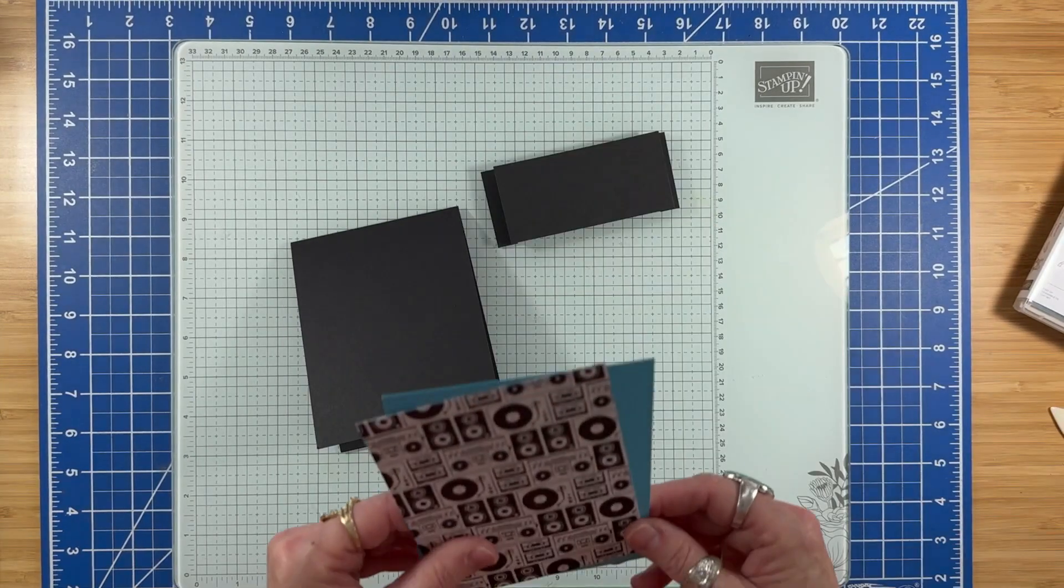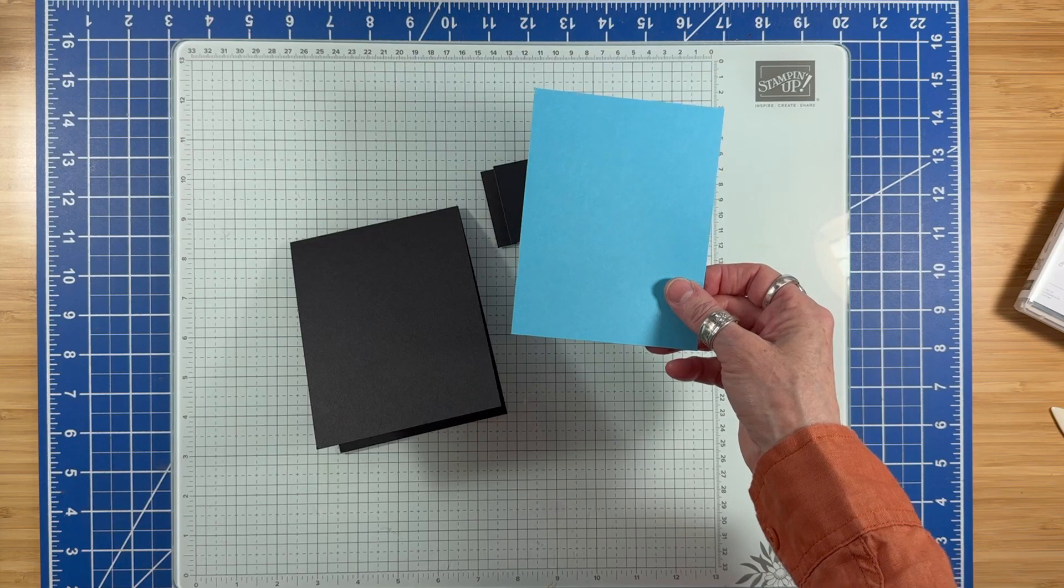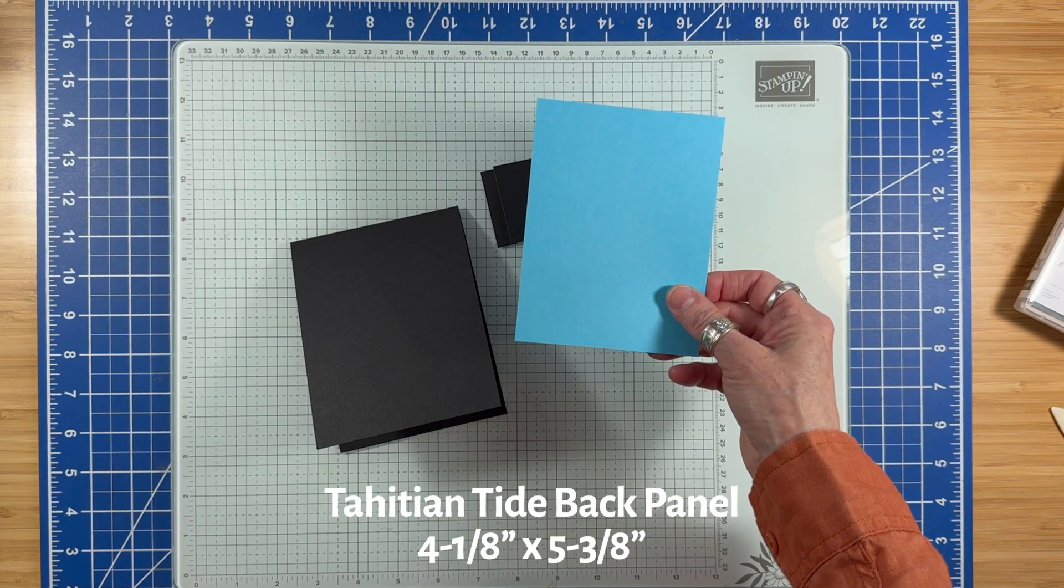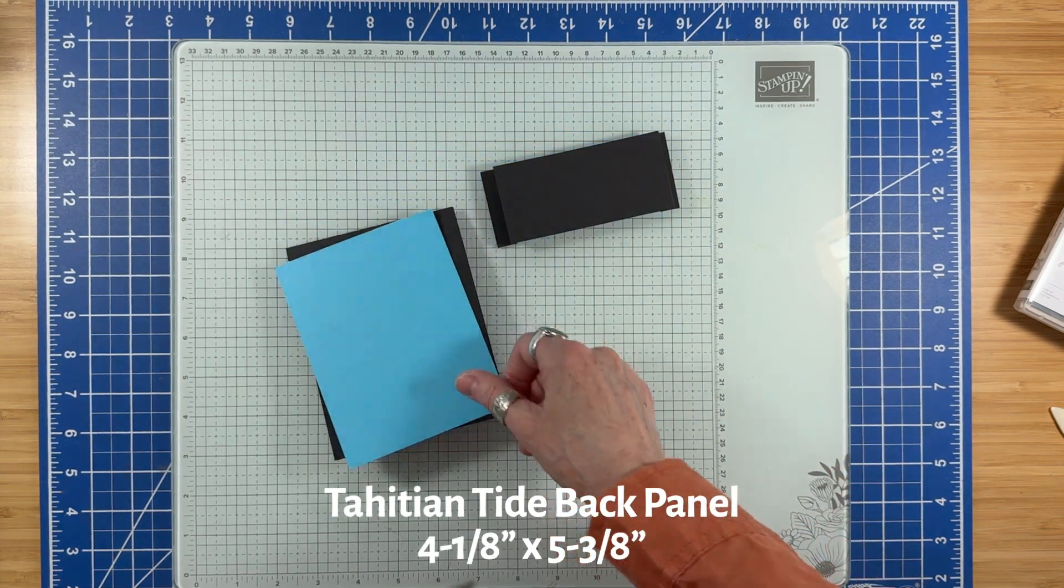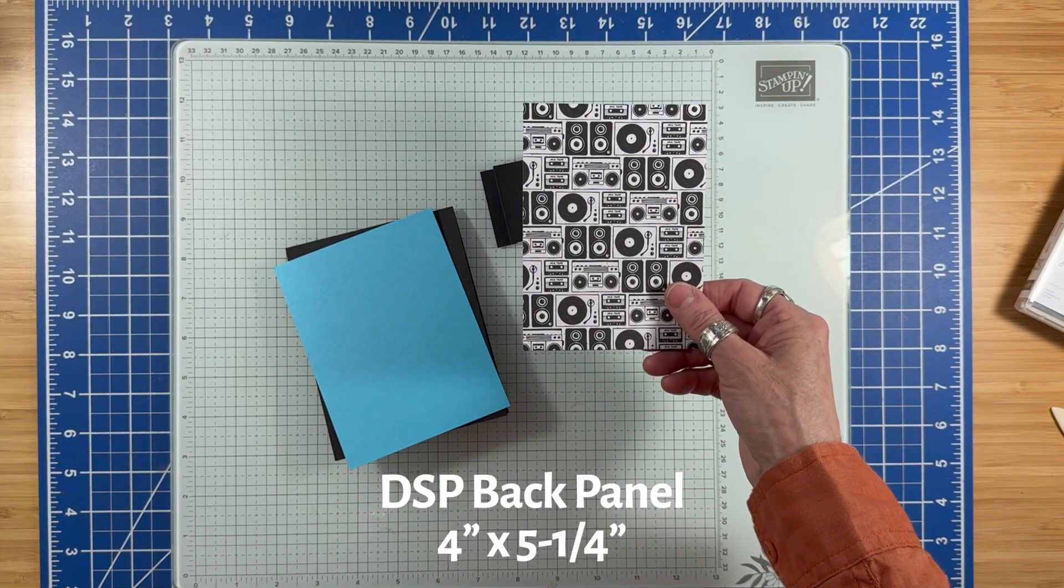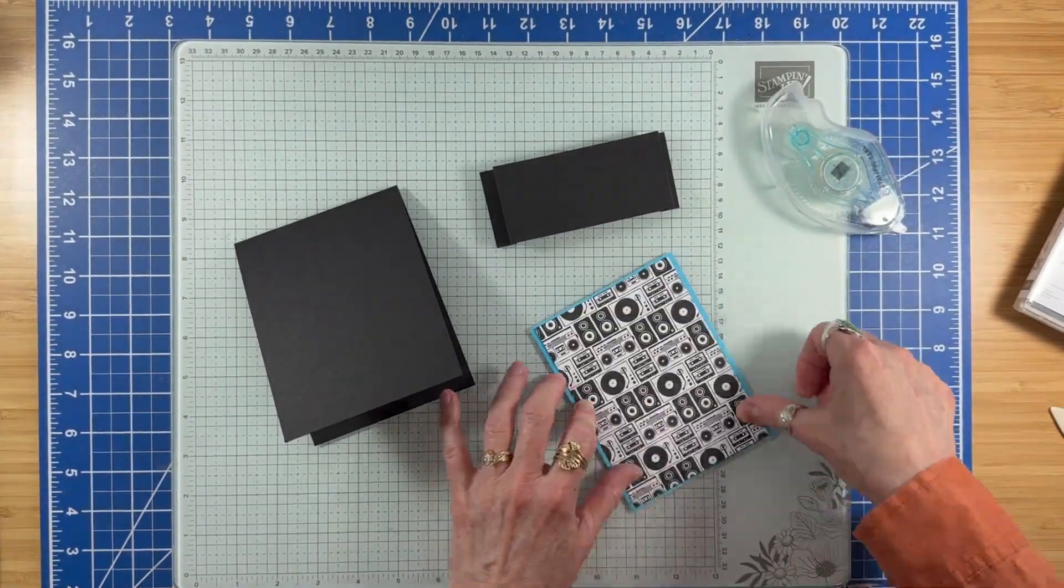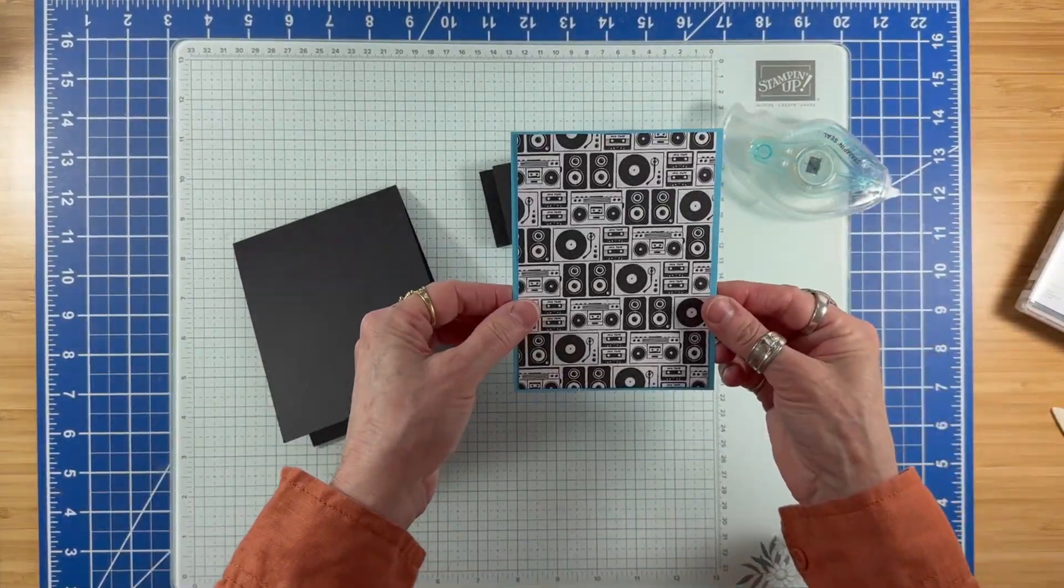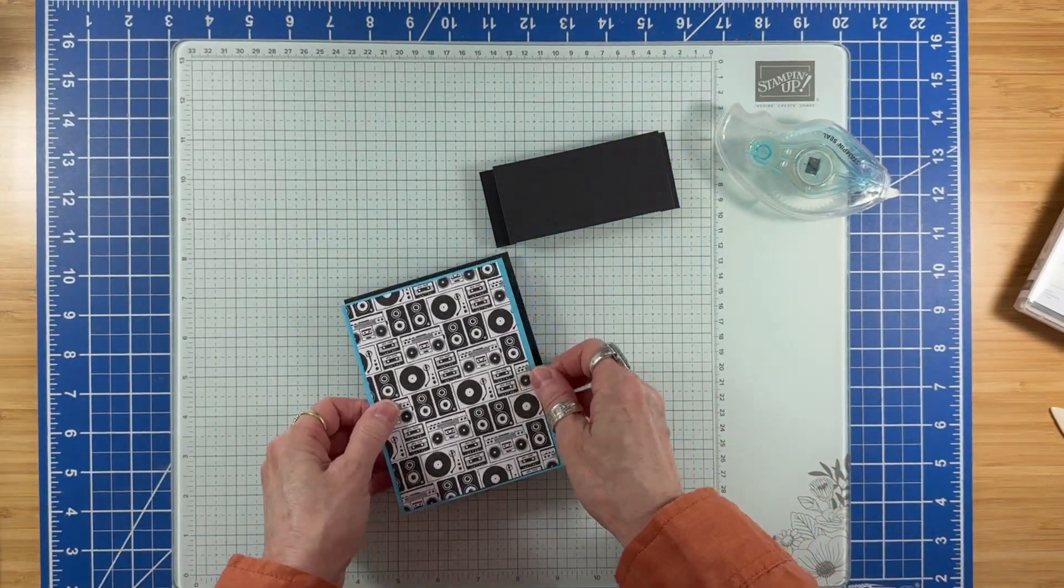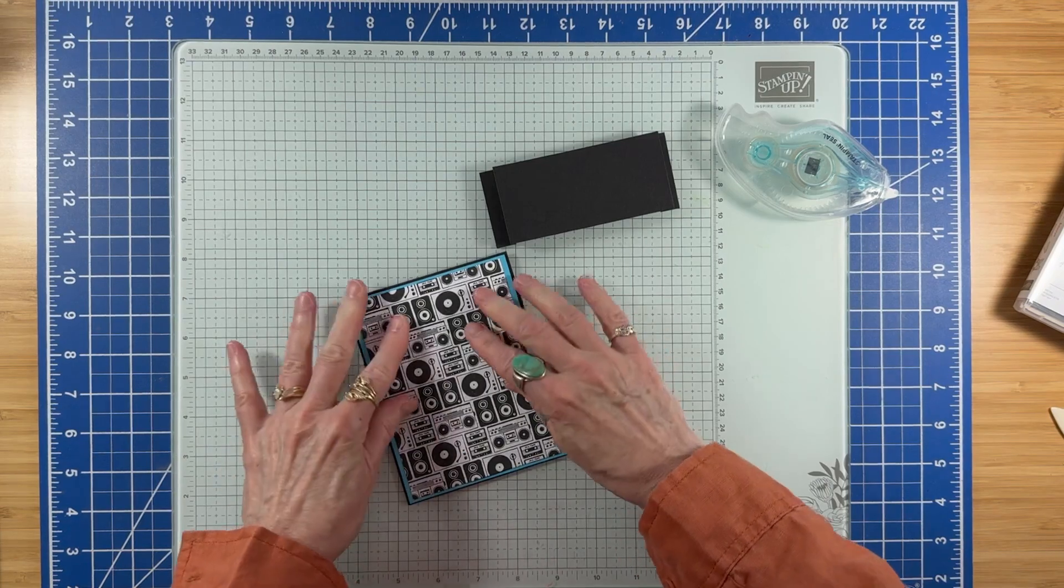For the back panel, I have a piece of Tahitian Tide cardstock measuring 4.125 by 5.375 inches, and a piece of cardstock measuring 4 inches by 5.25 inches. This pattern is from the Rock and Roll DSP, and if you don't have that DSP, just substitute whatever you have.